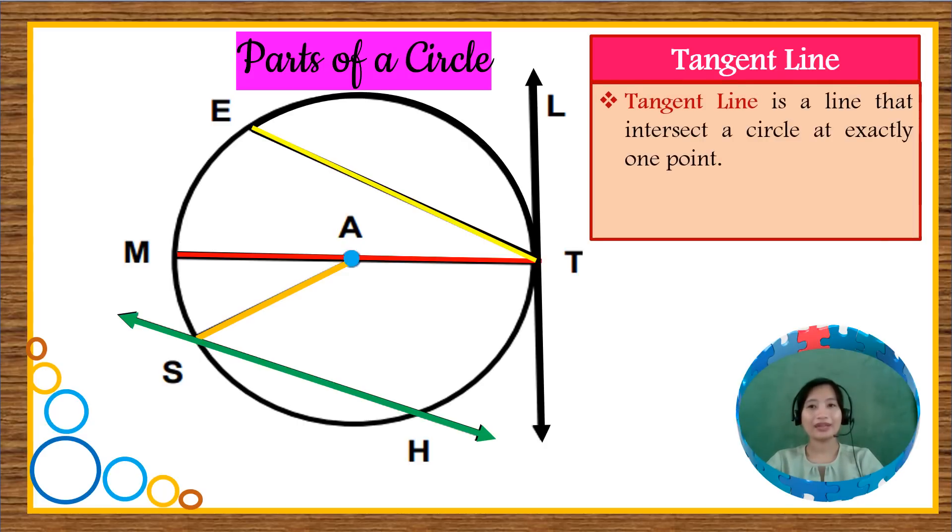We also have tangent line, which is a line that intersects a circle at exactly one point. Again, at exactly one point. While the secant line a while ago intersects the circle at two points. For our diagram, the tangent line in the circle is line LT. Again, line LT is the tangent line in our diagram.